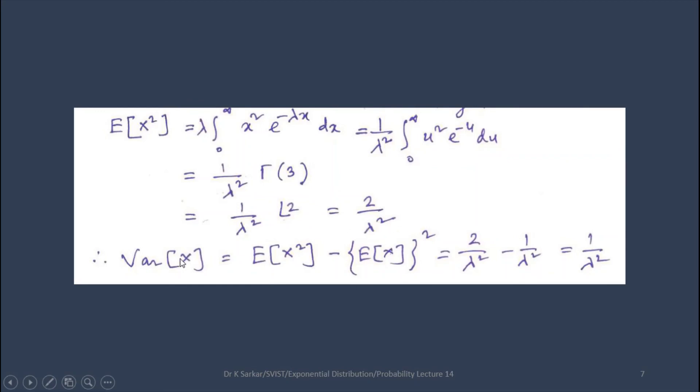Now, let us put all these values in the variance formula. Variance of X equals expectation of X squared minus expectation of X squared. That is 2 by lambda squared minus 1 by lambda squared, so variance of X is 1 by lambda squared.